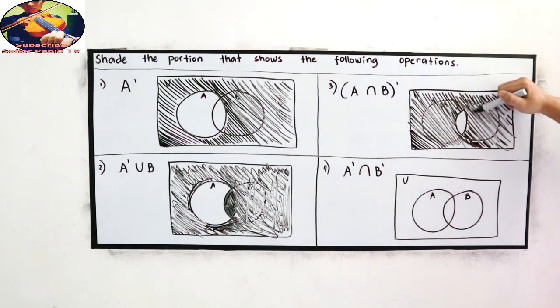Do not include the intersection of set A and set B. So this must be clean in that portion.